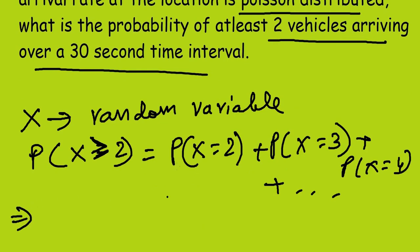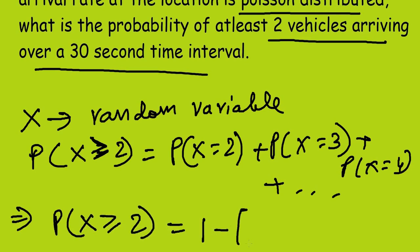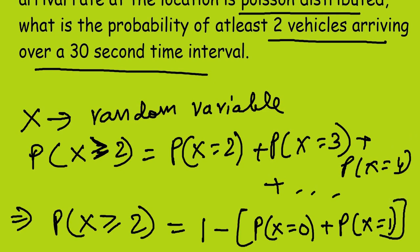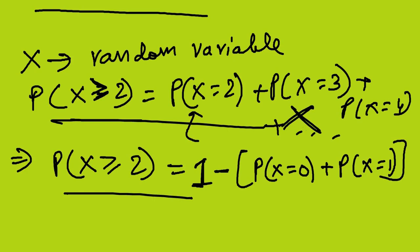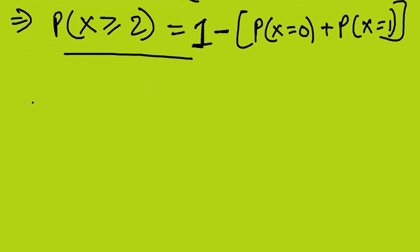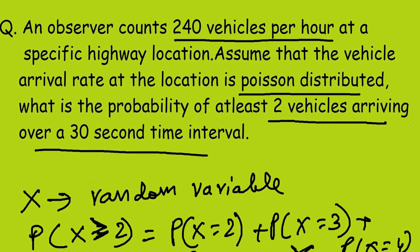Instead of computing infinitely many terms, we use a shortcut: P(X ≥ 2) = 1 minus [P(X=0) + P(X=1)]. The value 1 represents the entire probability, so subtracting P(X=0) and P(X=1) gives the remaining probability.